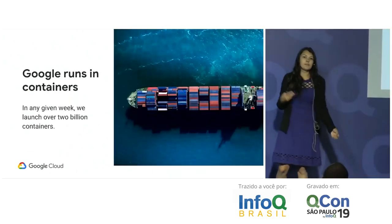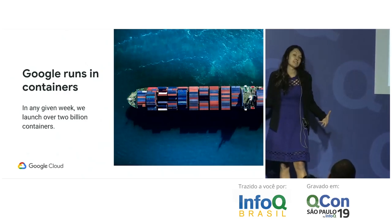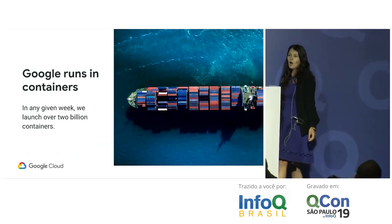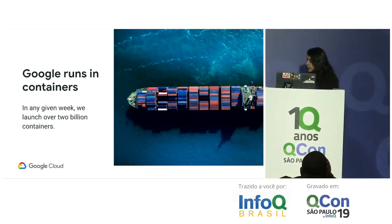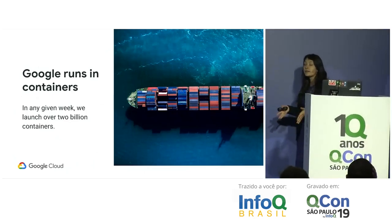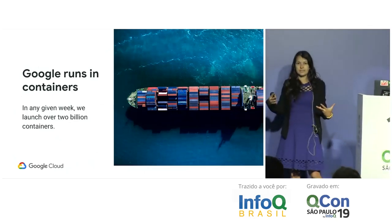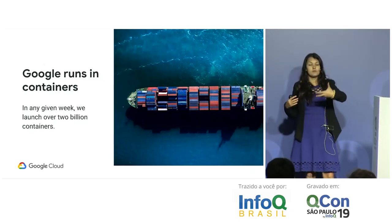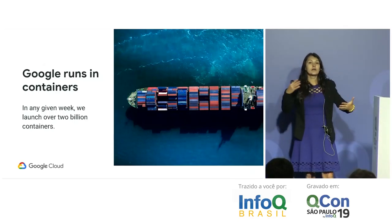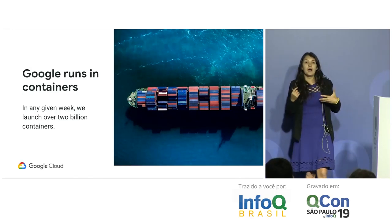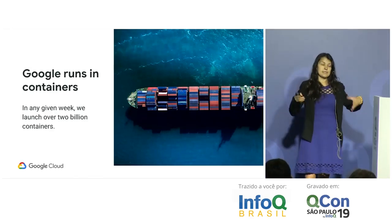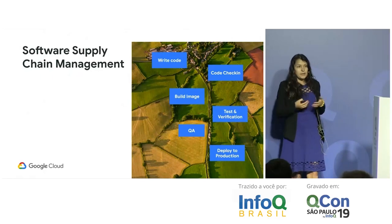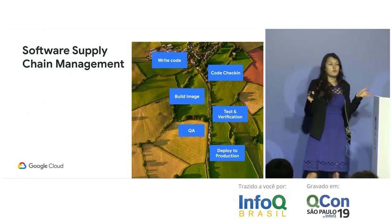Let's start with software supply chain management. Google runs on containers and every week we deploy over 2 billion containers. So we have a pressing need to understand what happens to containers, what happens to the code that gets deployed and runs, and where is the code that we just wrote. We need a lot of observability around it.